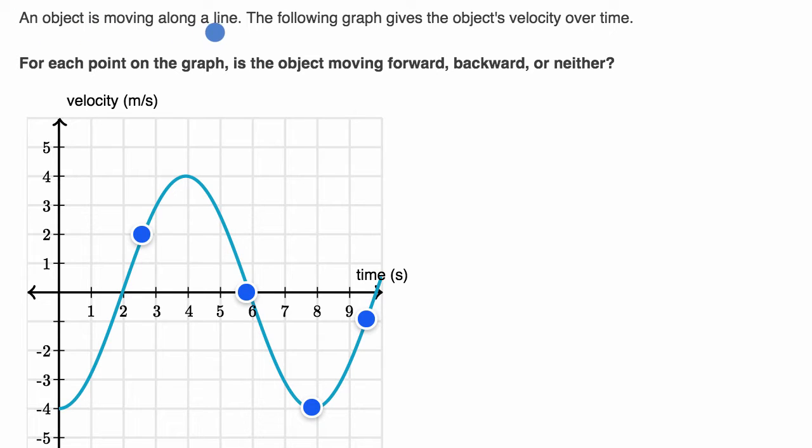An object is moving along a line. The following graph gives the object's velocity over time. For each point on the graph, is the object moving forward, backward, or neither? So pause this video and see if you can figure that out.